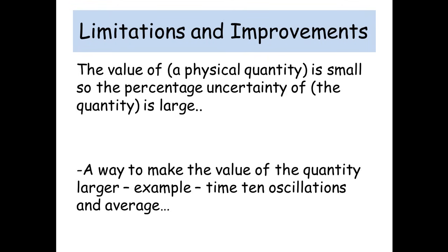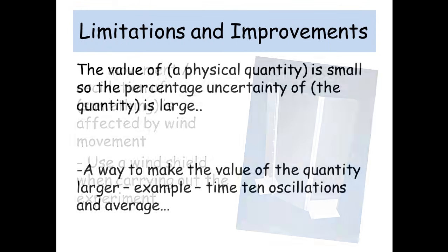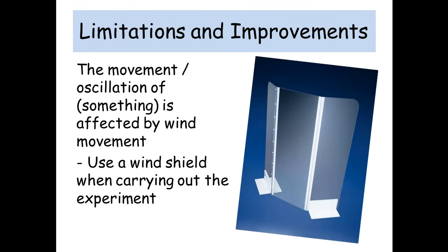You need to think about the value of a physical quantity. It might be so small that the percentage of uncertainty is going to be quite large. So you need to think of a way of making the value of the quantity larger. So you could say, make time 10 oscillations and take an average. Something like that, if it's an oscillation experiment. If it's an oscillation or something's moving, it might be affected by the wind. Use a windshield when carrying out the experiment.